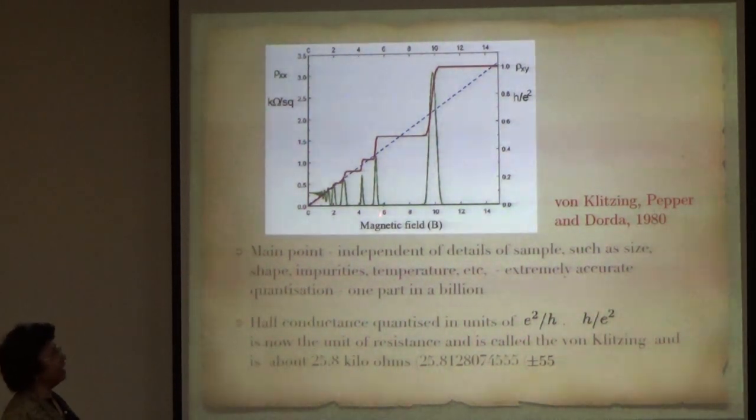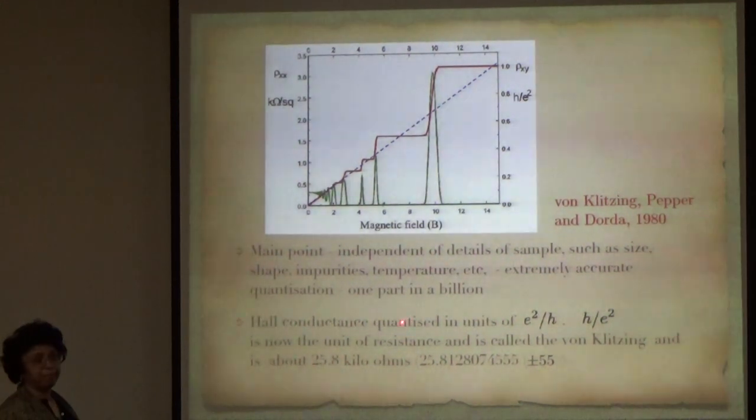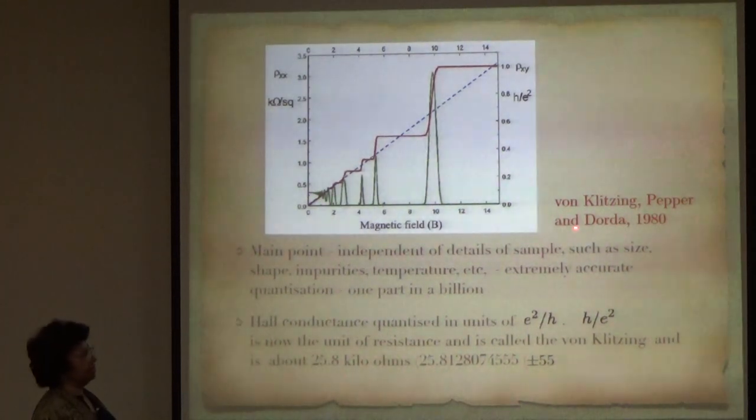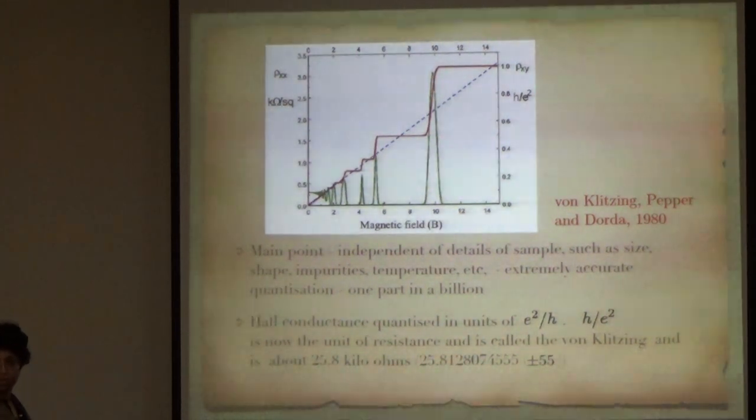And it was extremely accurately quantized to one part in a billion. This was von Klitzing, Dorda, and Pepper in 1980, and as many of you would know, they got the Nobel Prize very quickly in a couple of years.